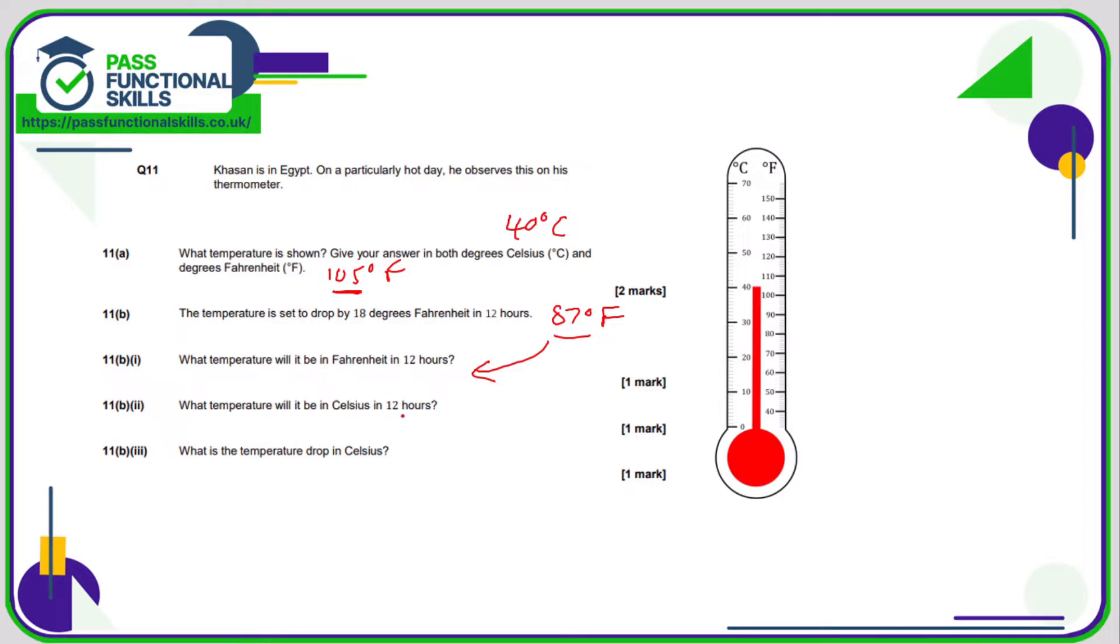That is question B1. So B2, what temperature will it be in Celsius in 12 hours? Well, there's a few assumptions here. We started off at 105, so that takes us down to 87, which is a fair bit of guesswork. I would go along with let's just call that 30, might be 31 degrees Celsius. So what's the temperature drop in Celsius? Well, it's dropped from 40 to 30, which is 10 degrees. But if you've not got all of these answers exact, I mean I'm not even convinced my answers are spot on. Hopefully the overall temperature drop, whether it's 9, 10, 11, should all be acceptable answers in my opinion.